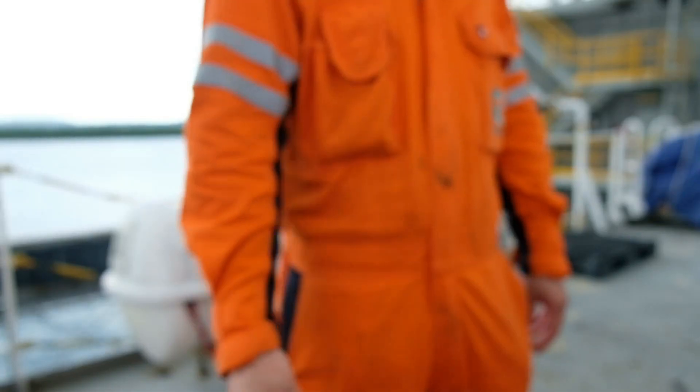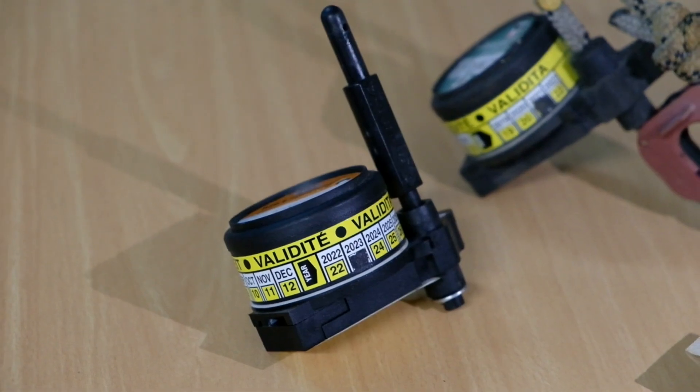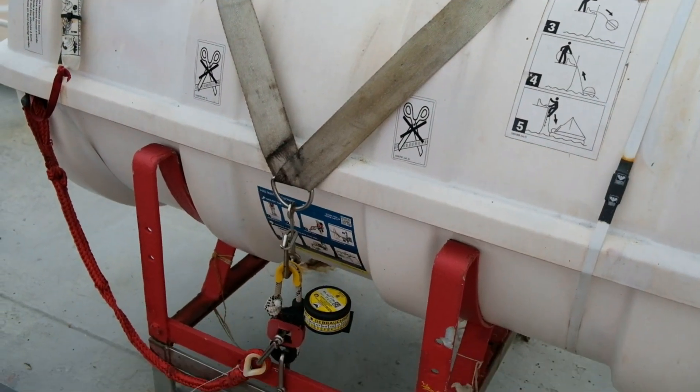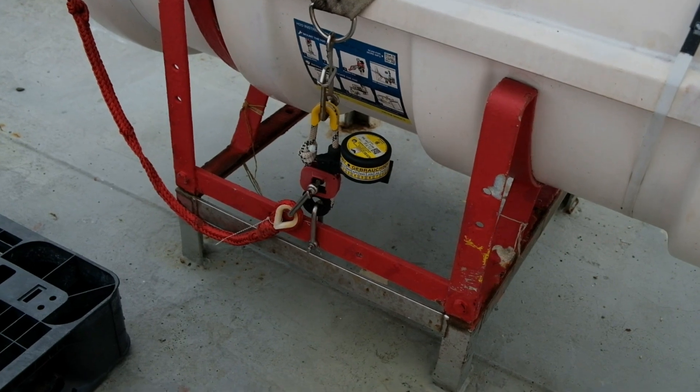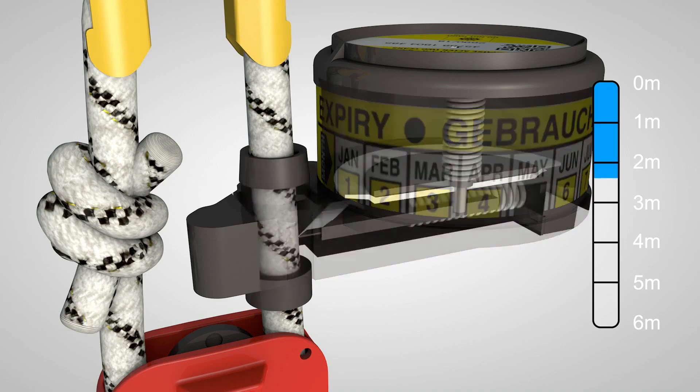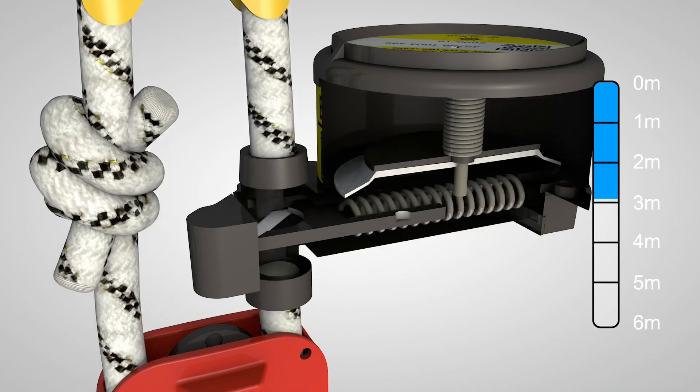The hydrostatic release unit, or as we call it, the HRU. Most of us seafarers are familiar with this device, maybe even before embarking our first vessel. The basic concept is that it automatically releases a sinking vessel's life raft or EPIRB at a particular depth.